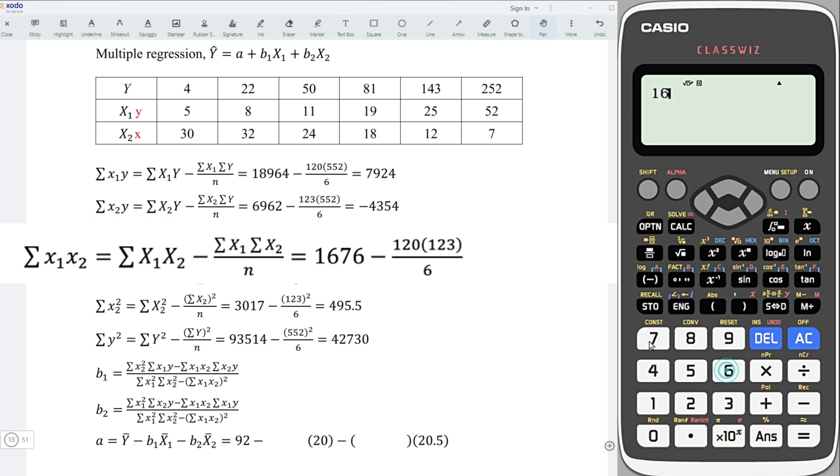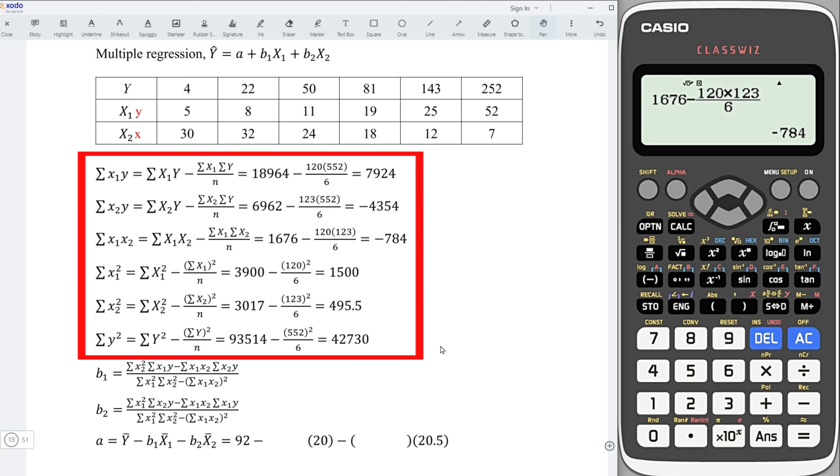Next, 1676, minus, fraction, 120, multiply, 123, divided by 6. And we obtain negative 784. With all these sum of squares, we can now determine the coefficients.